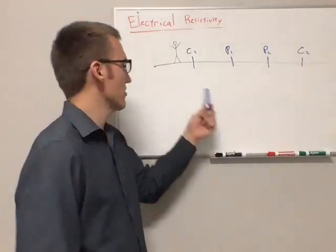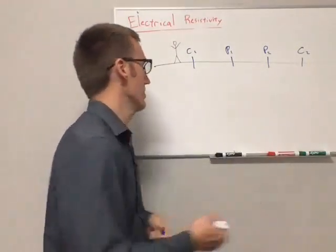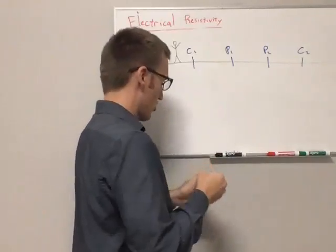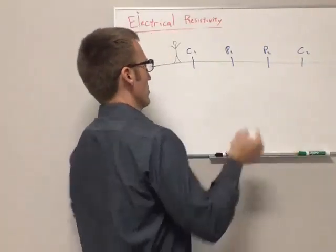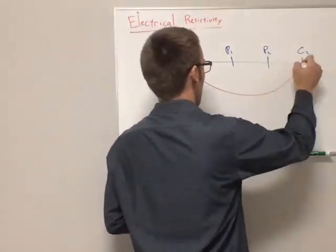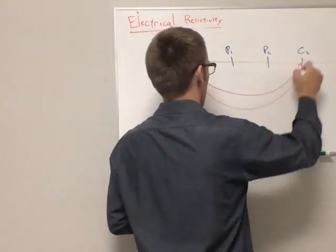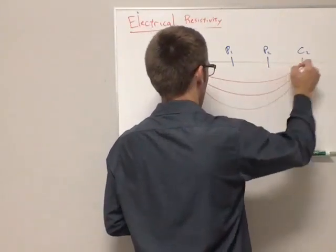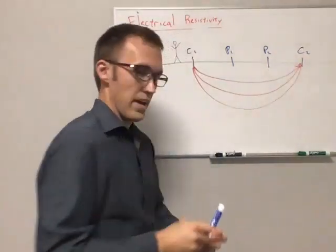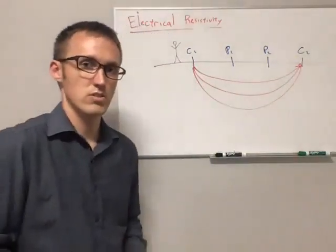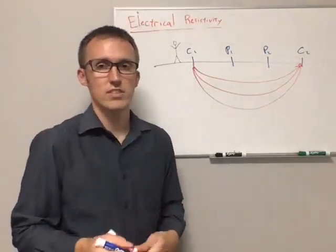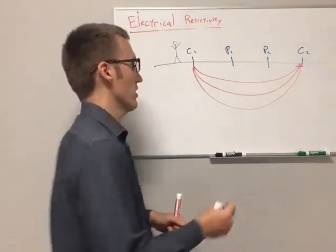And just to put some context, we have a source and a sink node, so electricity is traveling through the ground from the source to the sink. And we're measuring the voltage drop, or voltage potential difference, across the two point nodes.